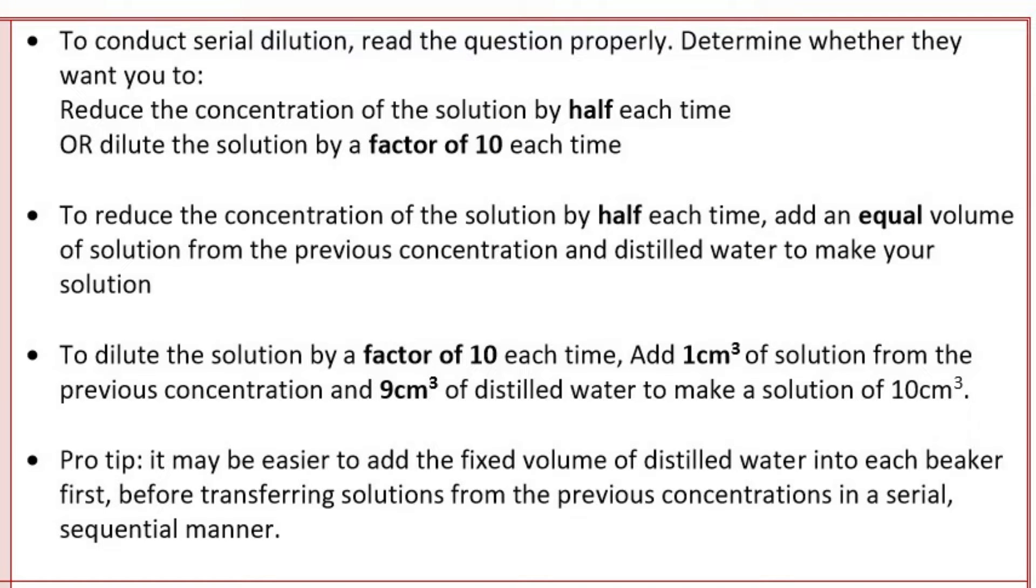Let's first talk about how to conduct serial dilution. In the question given, you have to determine whether they want you to reduce the concentration of solution by half or dilute the solution by a factor of 10 each time. To reduce the concentration of solution by half each time, we have to add an equal volume of solution and equal volume of distilled water. If it's diluting the solution by a factor of 10, then usually it's 1 cm³ of the solution added to 9 cm³ of distilled water to make up a solution of 10 cm³.